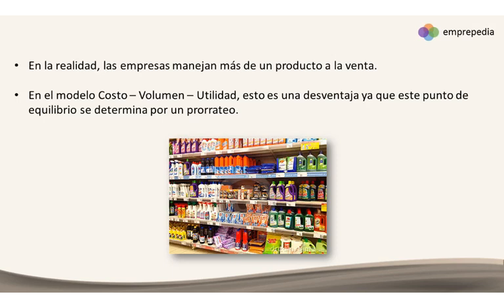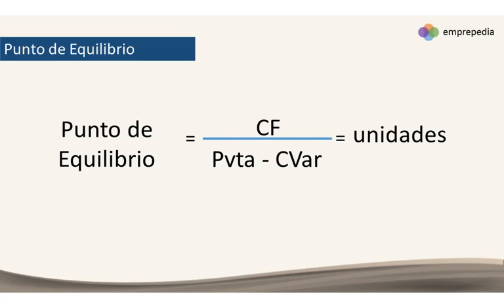Entonces empezamos con un gran problema: ¿cómo reconocer la participación que tienen los productos en el ingreso total? ¿Cómo vamos a determinar el punto de equilibrio y esas unidades que se van a vender? Debemos determinar cuántas unidades vender en cada uno de los productos para alcanzar un punto de equilibrio general. Ocupamos la misma fórmula, con una variación: ahora el objetivo va a ser conseguir un margen de contribución ponderado, donde se promedie el margen de todos los productos que tengamos.